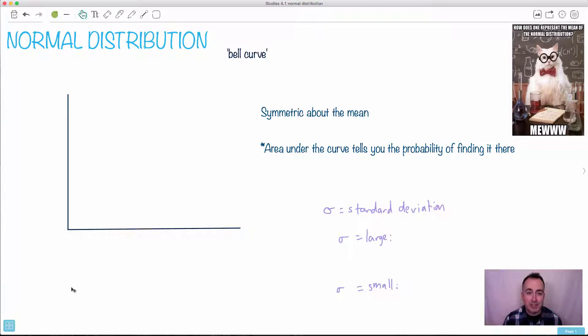Normal distributions, otherwise known as a bell curve. How does one represent the mean of the normal distribution? Mu. You know why that is? Remember what mean is? Let's actually write this down. We need to know this. So the mean, what is that? That's the average. That's true. But even better than that, we can use this symbol X with a bar on top of it or we can use this mu. That's why we say ha ha mu.